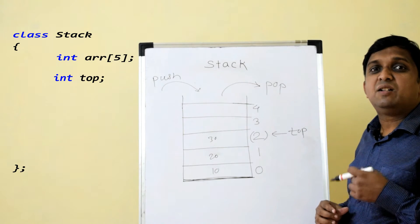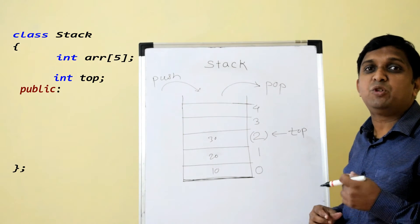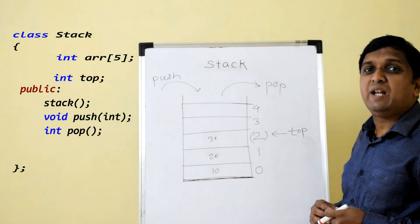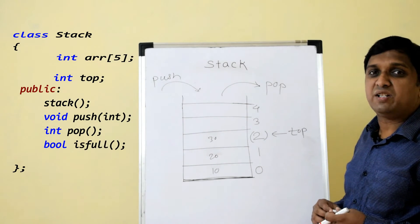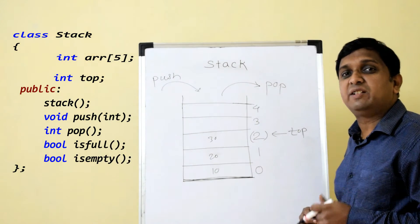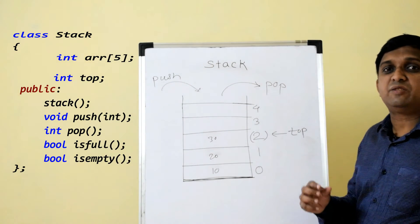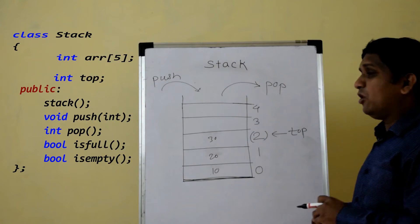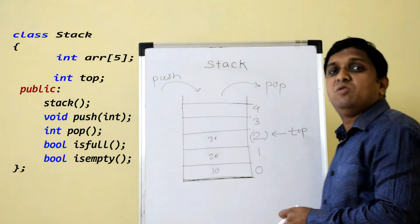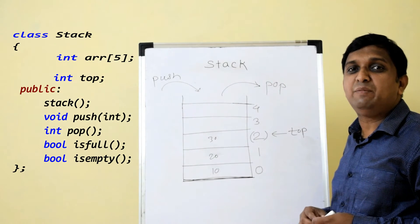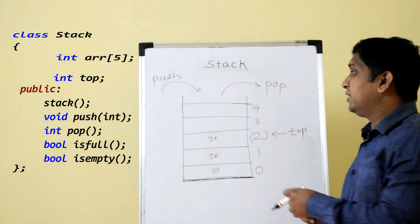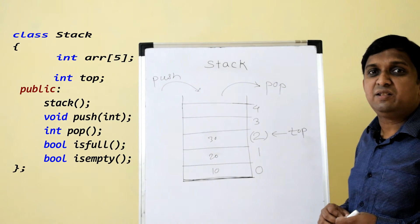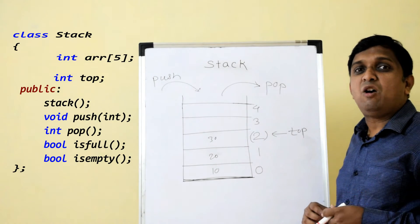The operations on stack are the member functions of the class: push, pop, and also isFull and isEmpty. These two functions handle corner cases. There are two corner cases: overflow — trying to push onto a full stack — and underflow — trying to remove from an empty stack. isFull and isEmpty are used to check those conditions.